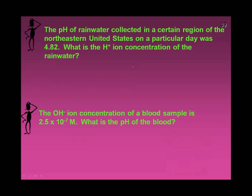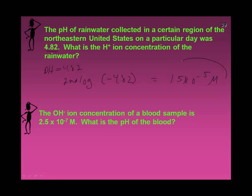The pH of rainwater collected in the US on a particular day was 4.82. What is the H+ concentration? If pH equals 4.82, I take the anti-log — second log — of negative 4.82, and I get 1.5 times 10 to the minus 5 molar.